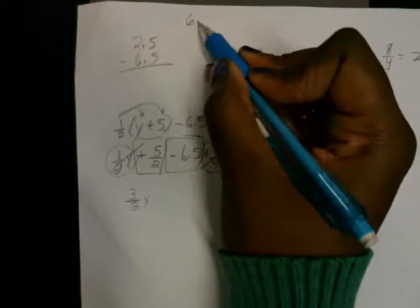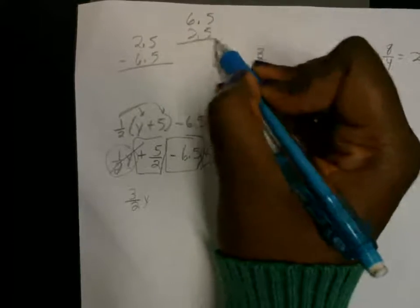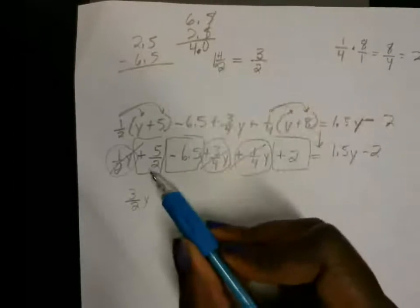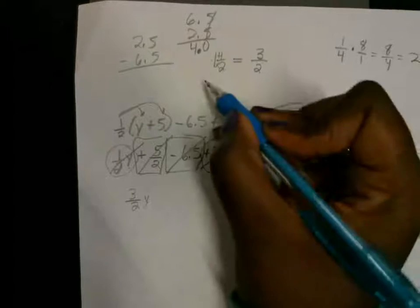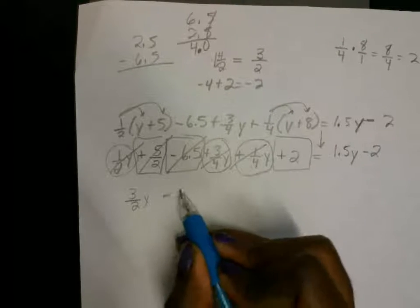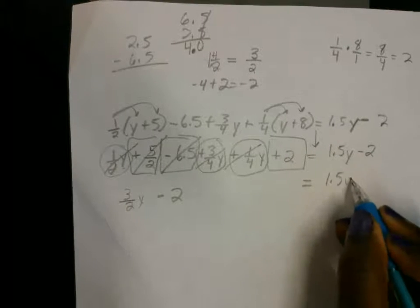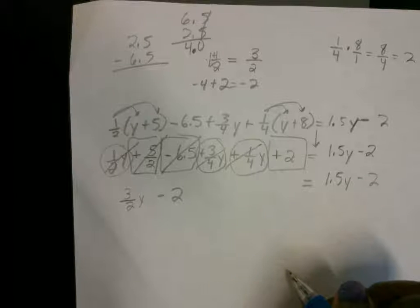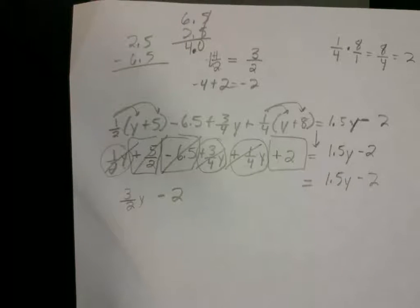So when we subtract, we know it's going to be a negative. But when we subtract it, it's going to be a negative. This is 0, this is 4. So we got negative 4. And so we have negative 4 plus 2. Negative 4 plus 2 gives me a negative 2. So this is going to be negative 2 here. Bring down the equal sign, bring down the 1.5y minus the 2 here.